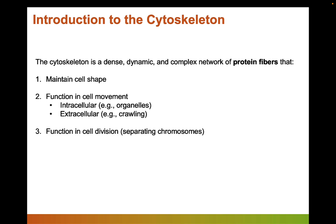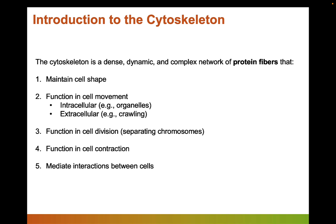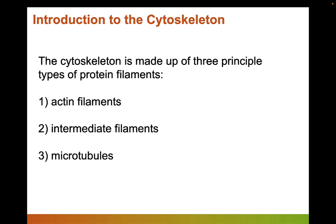The cytoskeleton plays a really important role in cell division, and we'll talk about how microtubules help separate chromosomes. It functions in cell contraction like muscle cell contraction and in cytokinesis. It also mediates the interaction between cells. I'm going to introduce the three principal types of protein filaments: actin filaments, which are sometimes called microfilaments because they were the smallest; intermediate filaments; and microtubules.